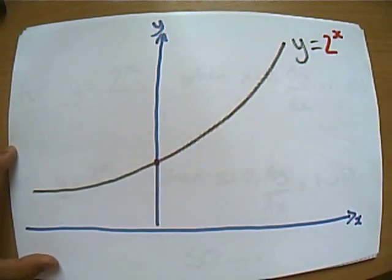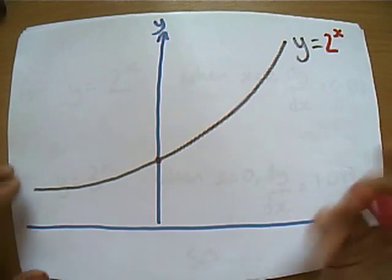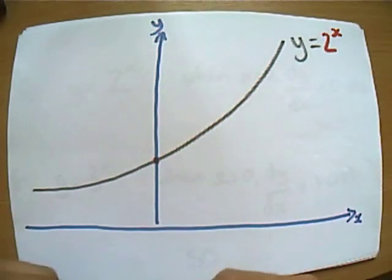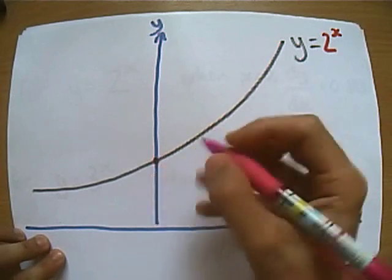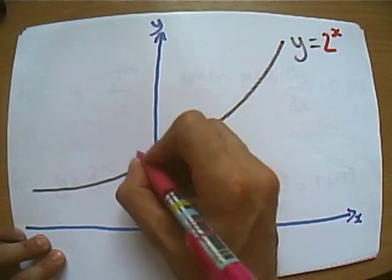We know that anything to the power of 0 always has a value of 1. So we know that all power graphs, all graphs where you've got something to the power of x, will go through this point (0,1).